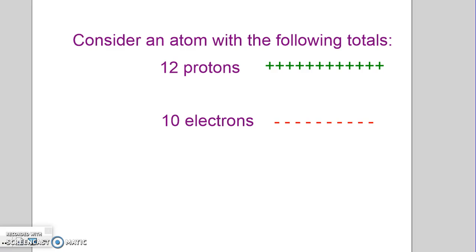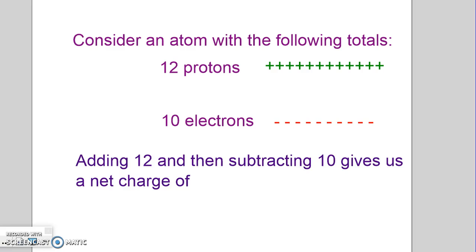12 positive numbers, 10 negative numbers. Essentially ends up being 12 minus 10. 12 positives, 10 negatives. 12 minus 10 gives us a net charge. Net charge is what we call the number we get when we add all these up. Well, that's right, it's plus 2. Positive 2.